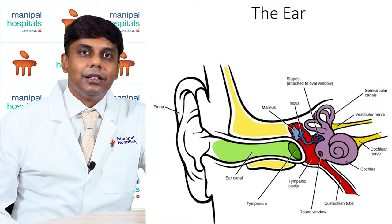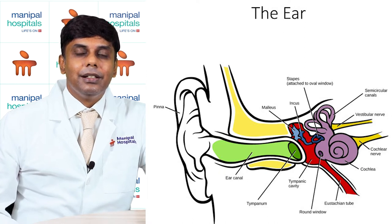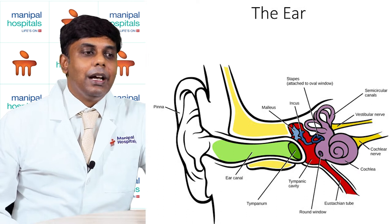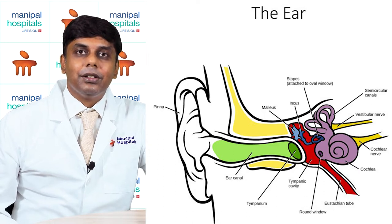The outer ear consists of the pinna and the external auditory canal. The middle ear is separated from the outer ear by a tympanic membrane or eardrum, and the inner ear consists of the sense organs.